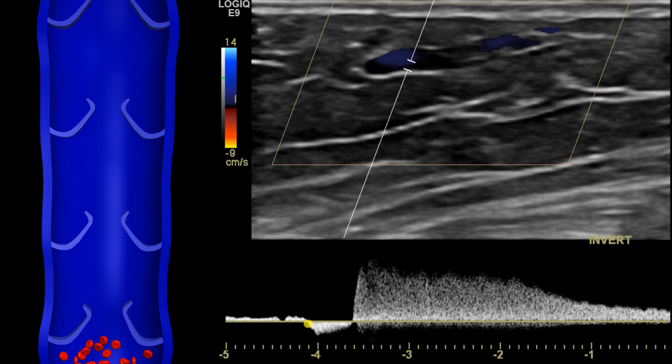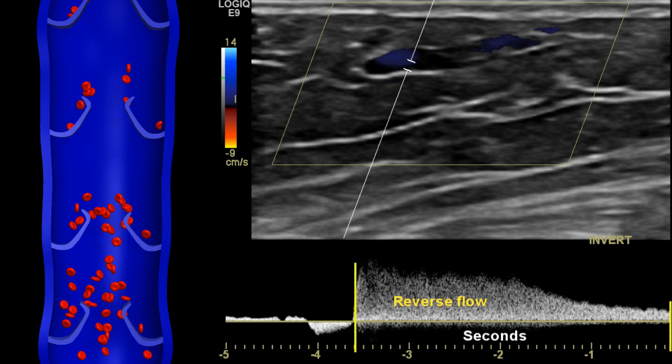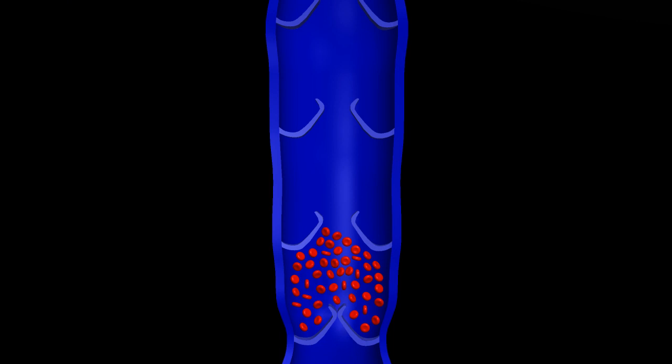However, if the vein is incompetent, the reverse flow can continue for multiple seconds, as in this example, where the flow reversal is greater than 3 seconds. The ultrasound can also determine if the incompetent vein is supplying the regional varicosities.